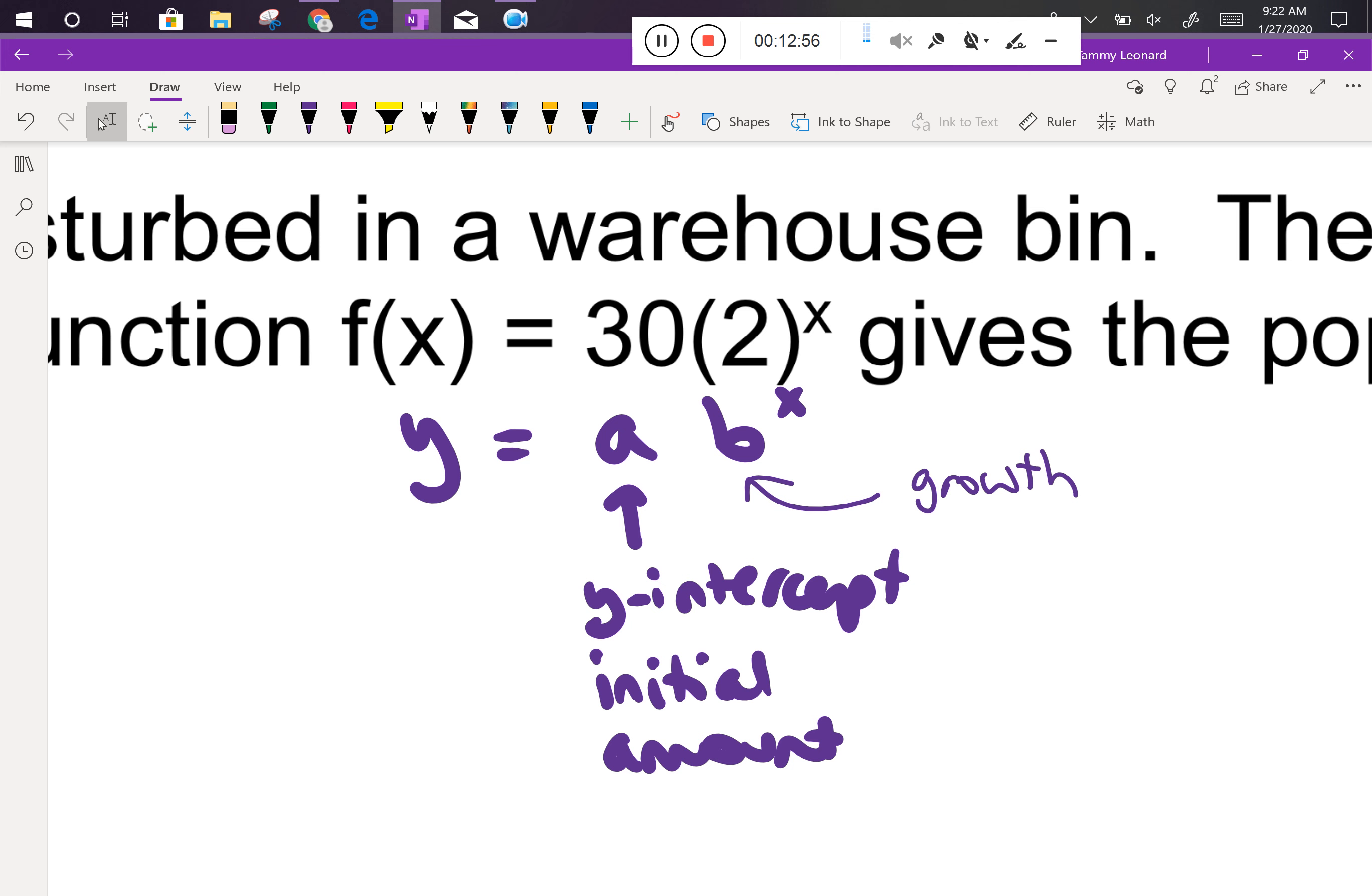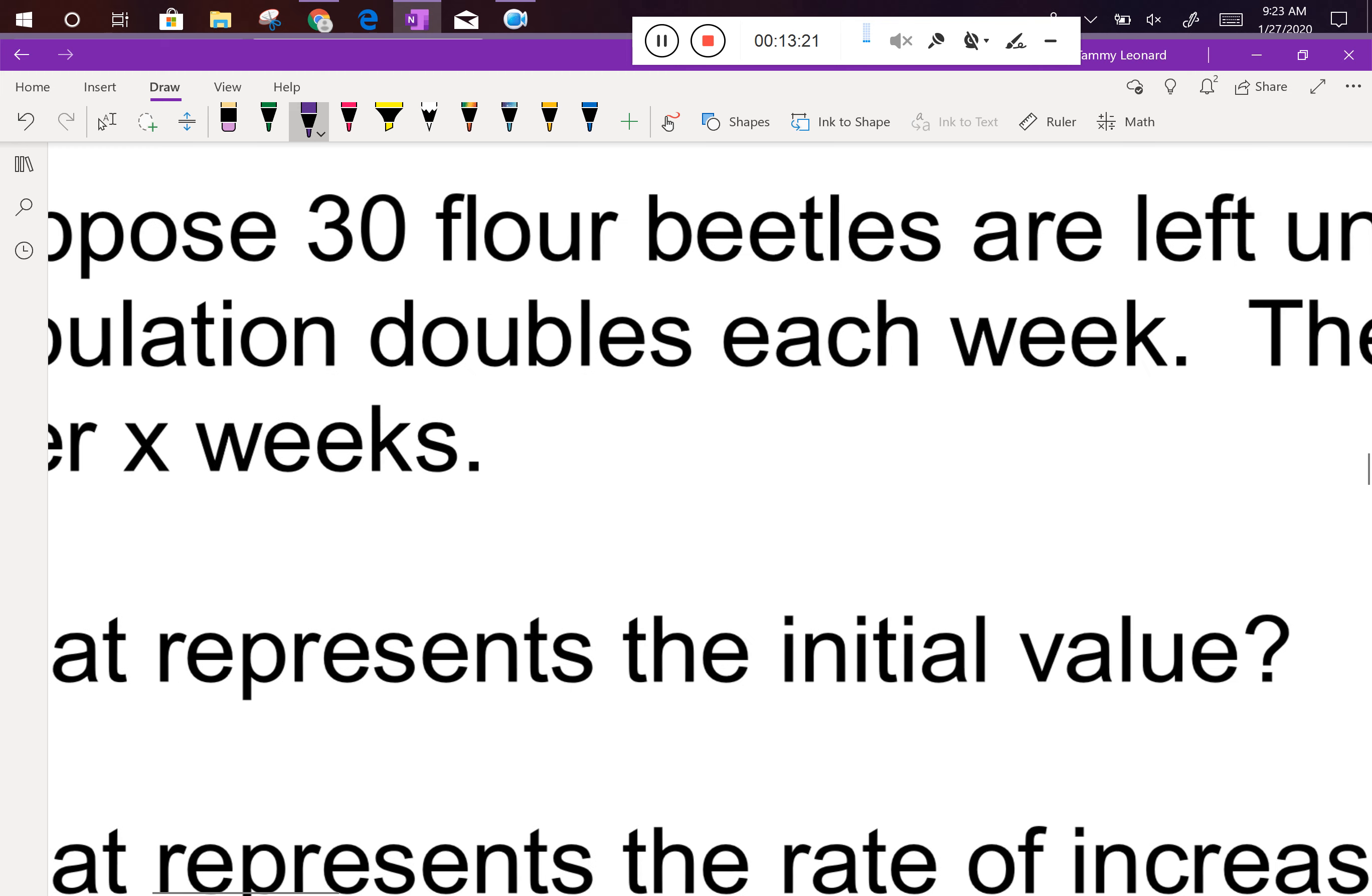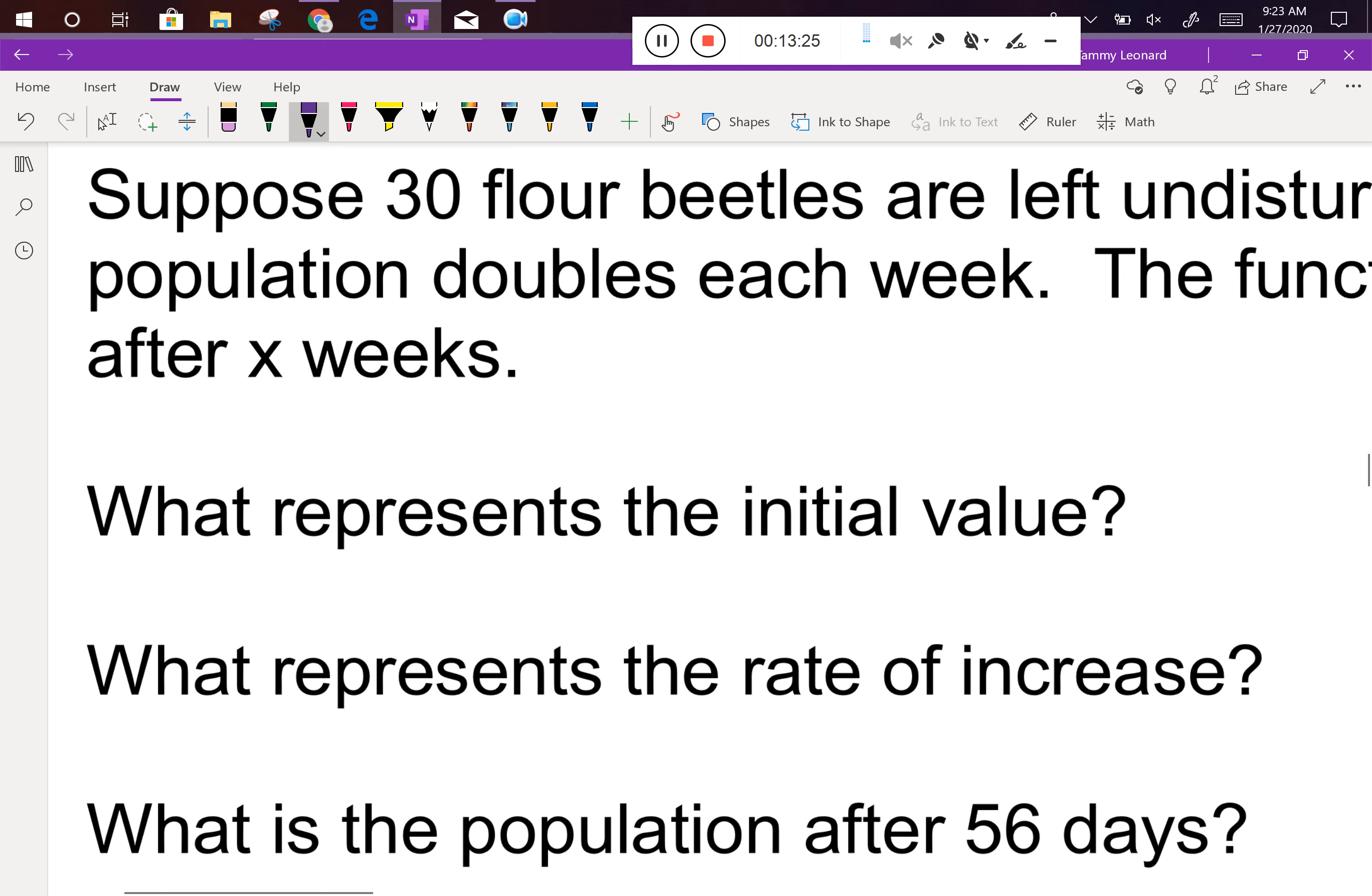So this is growth and it's doubling every single week, which is just horrifying. Now, we also can call this the rate of increase. So that's another term for b. There's lots of little vocab words that are going to come up today. So b is the growth factor, it's showing the rate of increase. So we're going to ask some questions about this little formula now that we've identified the parts. And the questions are written right on your paper. The first thing says, what represents the initial value?